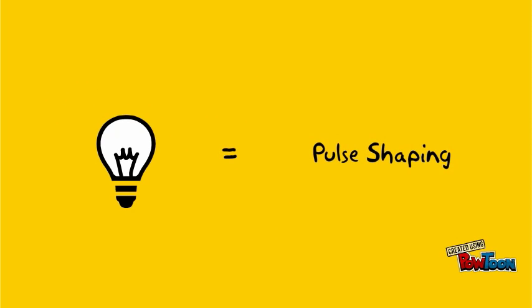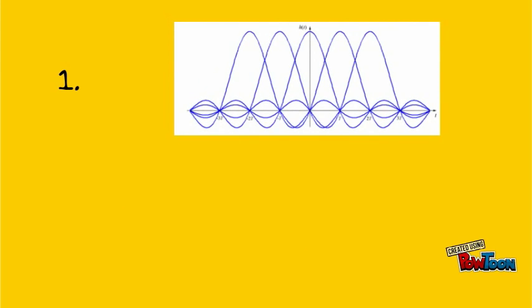The answer is pulse shaping. There are two criteria for non-interference systems where pulse shaping is employed. Number 1: The pulse shape exhibits a zero crossing at the sampling point of all pulse intervals except its own. And number 2: The pulse shape must be such that the amplitude decays rapidly outside the pulse interval.